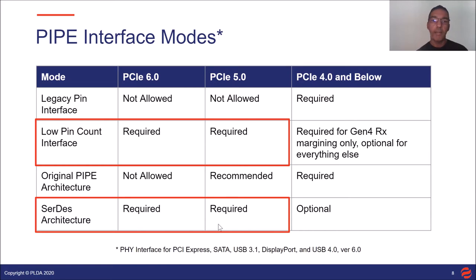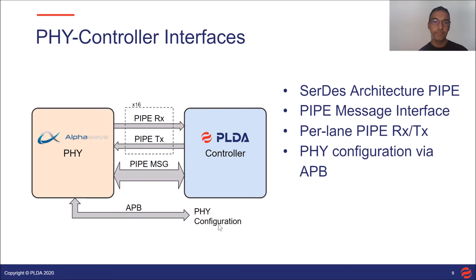Now let's take a look at the specific connection between the AlphaWave PHY IP and the PLDA controller IP. The AlphaWave PHY and PLDA controller use the thirded pipe architecture interface, which includes pipe transmit and receive signals for each lane to form up to a x16 link. The interface also includes a pipe message bus and a PHY-specific AMBA APB bus for PMA configuration and control.